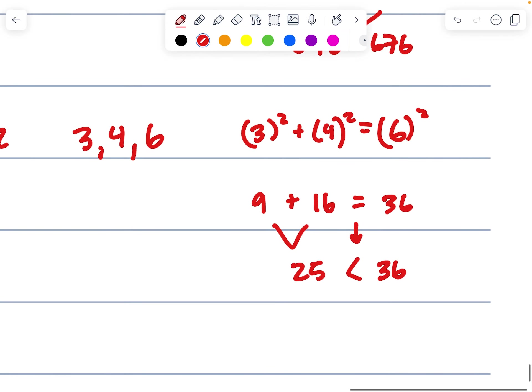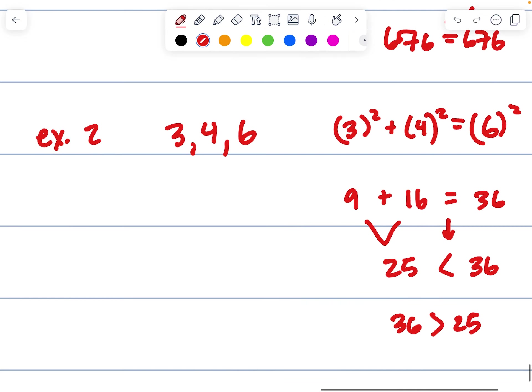9 plus 16 is 25, and this is where we actually change this to a less than 36. So, you could technically rewrite this or flip this around so the hypotenuse comes first. 36 is greater than 25. So, I'm going to write this both ways just so we can kind of understand it. The hypotenuse is in fact greater than 25, which means this particular triangle is an obtuse triangle.